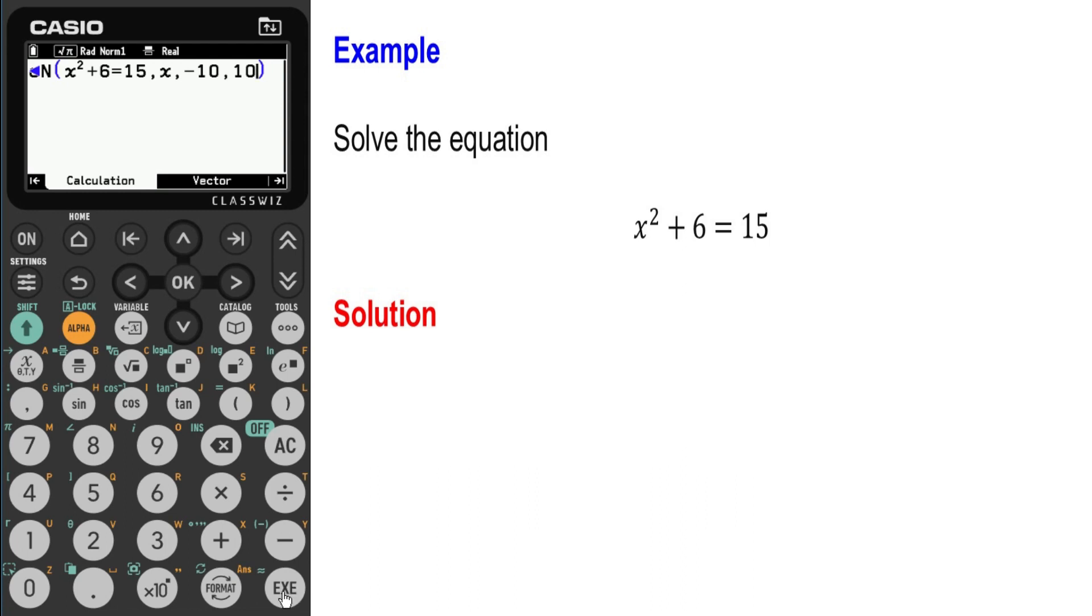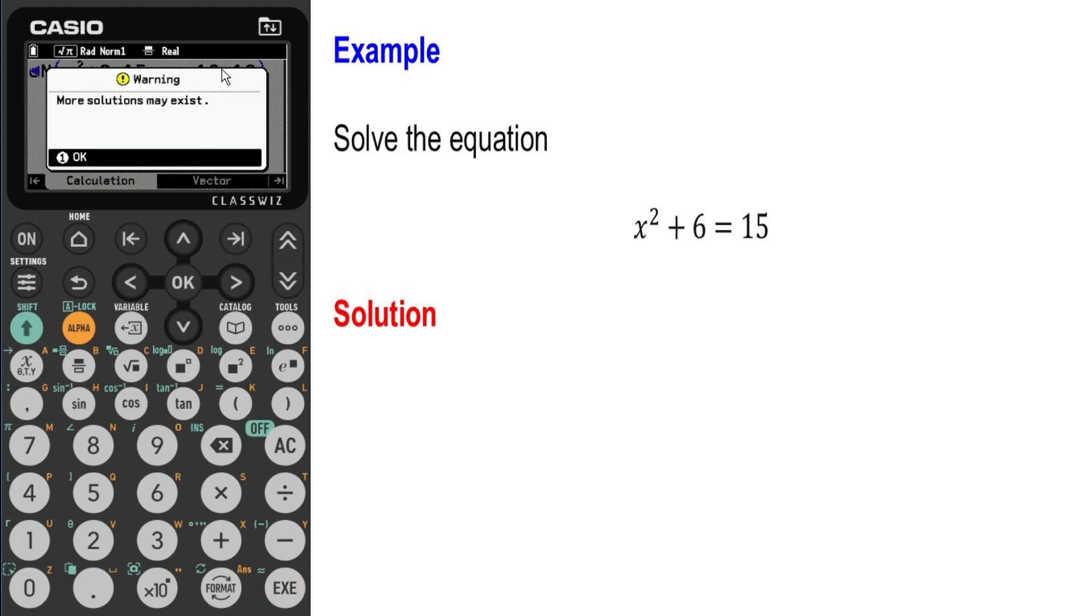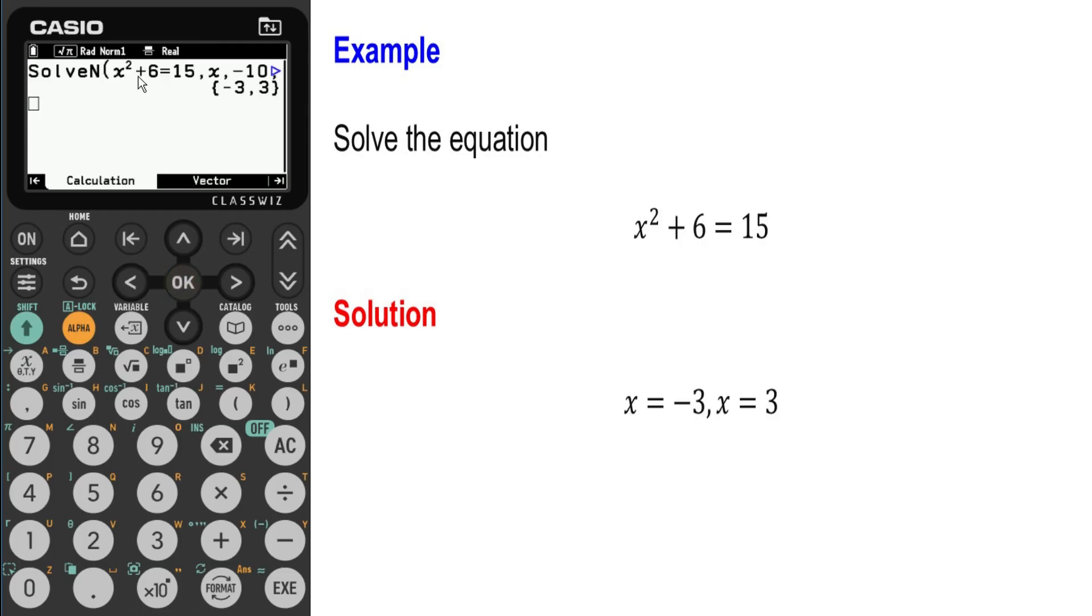If we press execute, this popup appears which tells us more solutions may exist. If I press ok, the calculator has solved for us this equation for values of x. It found for us x to equal negative three and x to equal three.